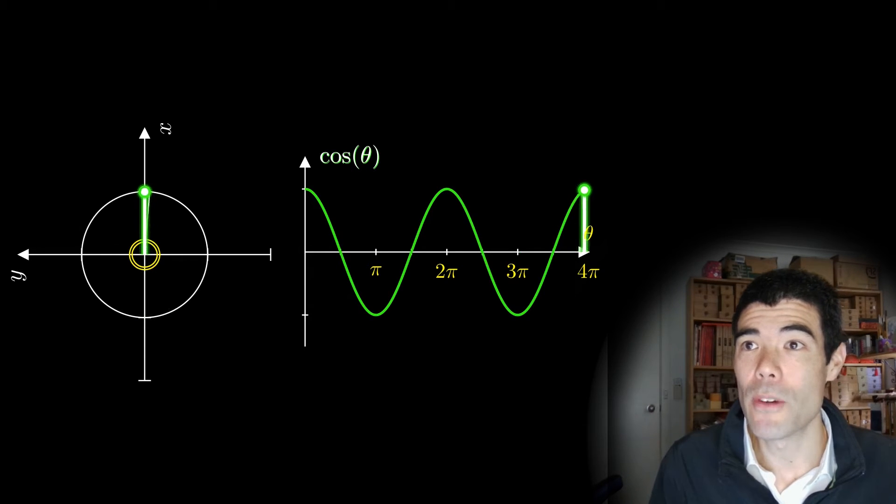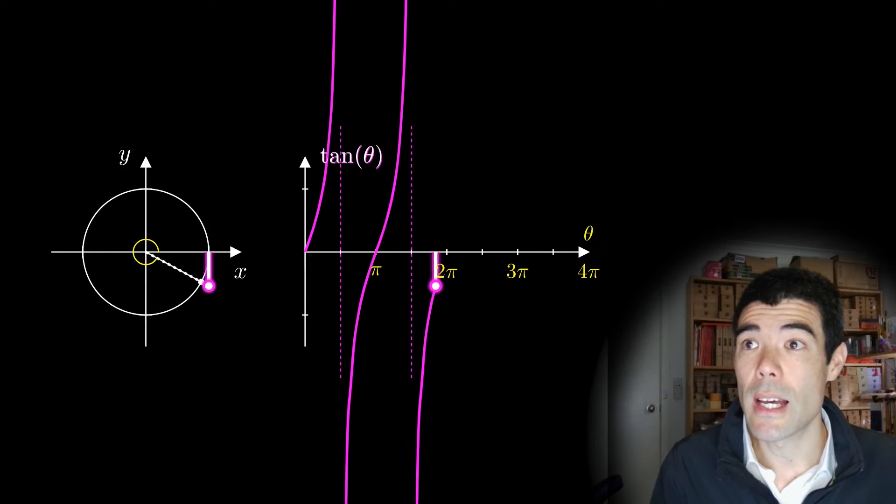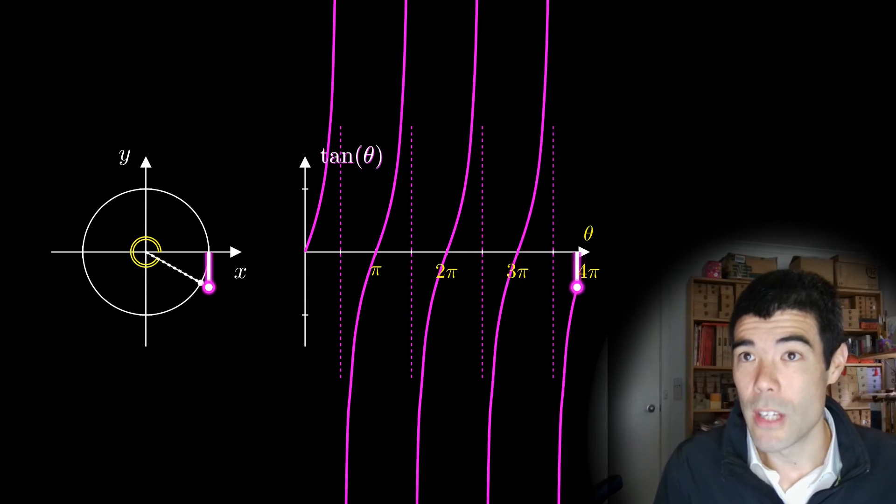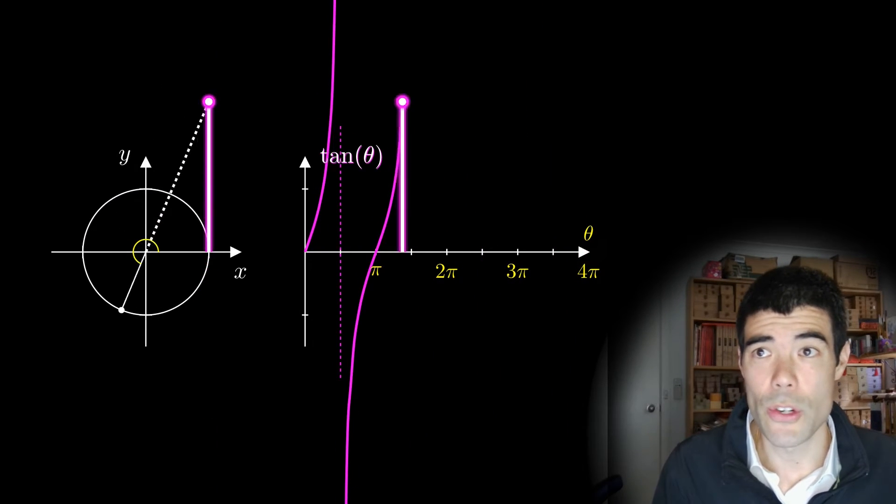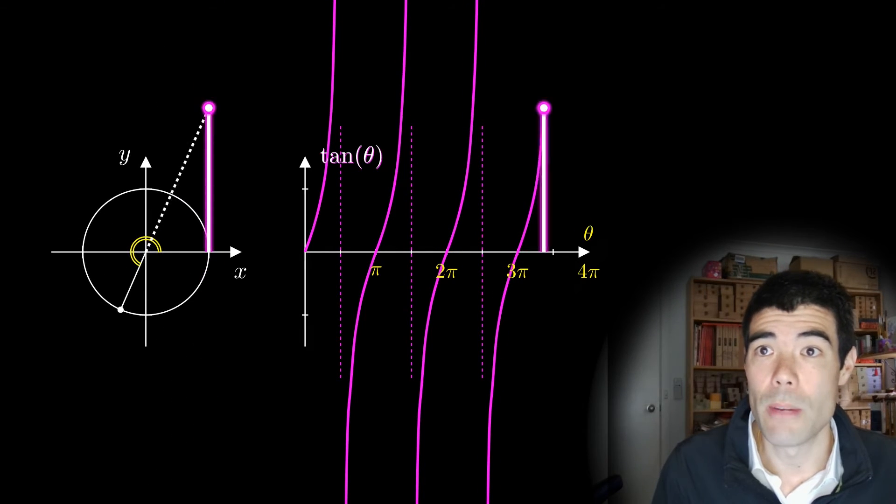We'll get to the secant in a minute, but first let me show the tangent function. So we can measure the tangent at the right-hand side of the circle, and again, if we do that, it lines up really nicely with the graph, and we can see the tan graph shooting off to infinity as the angle approaches the vertical at pi over 2, 3 pi over 2, etc.